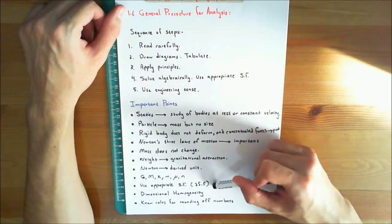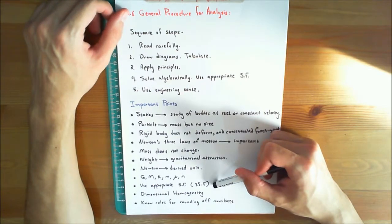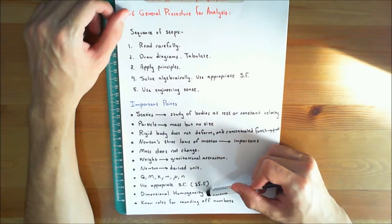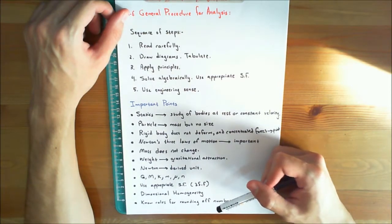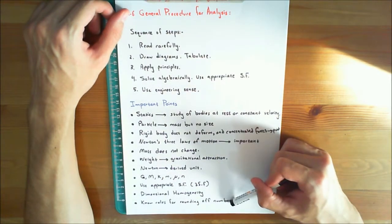Perform numerical calculations to several significant figures and then report the final answer to three significant figures. Algebraic manipulations of an equation can be checked in part by verifying that the equation remains dimensionally homogeneous. And finally, know the rules for rounding off numbers.